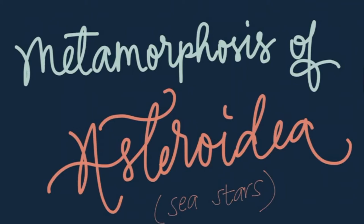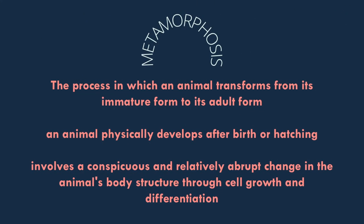The Metamorphosis of Sea Stars. Metamorphosis is a process in which an animal transforms from its immature form to its adult form. It is a biological process by which an animal physically develops after birth or hatching. It involves a conspicuous and relatively abrupt change in the animal's body structure through cell growth and differentiation.